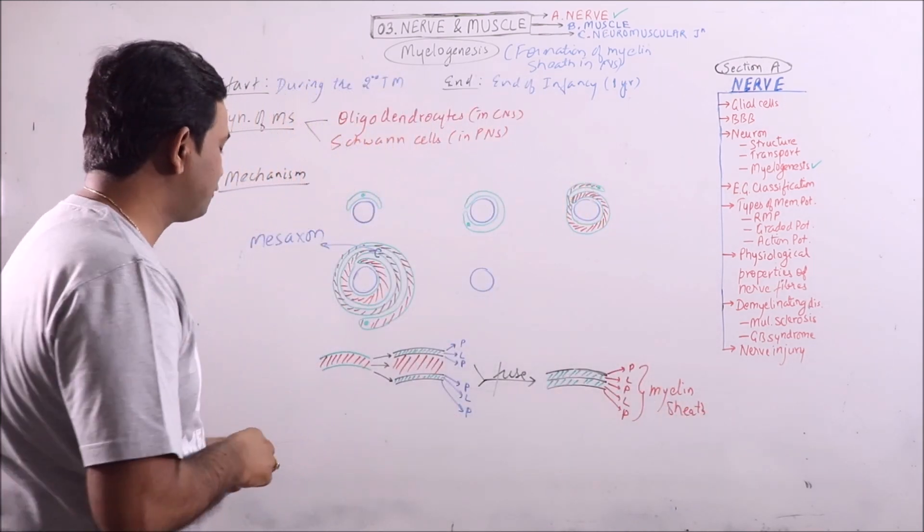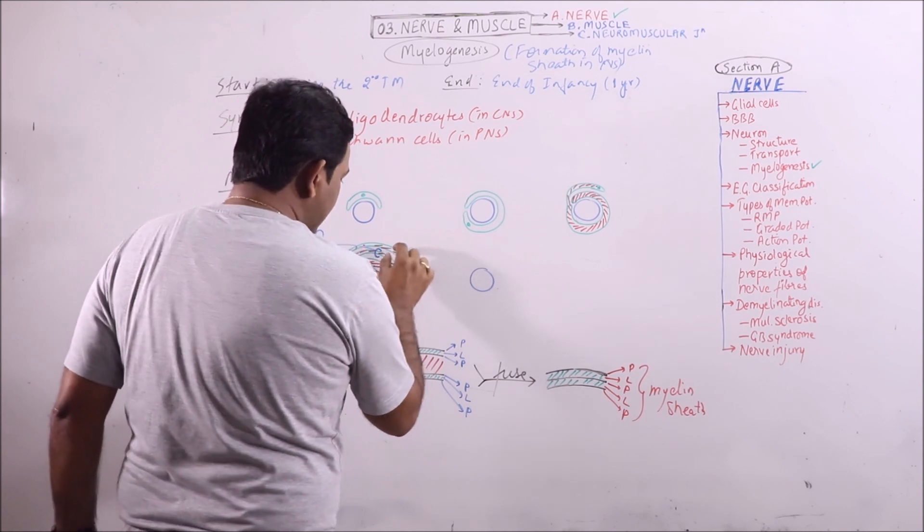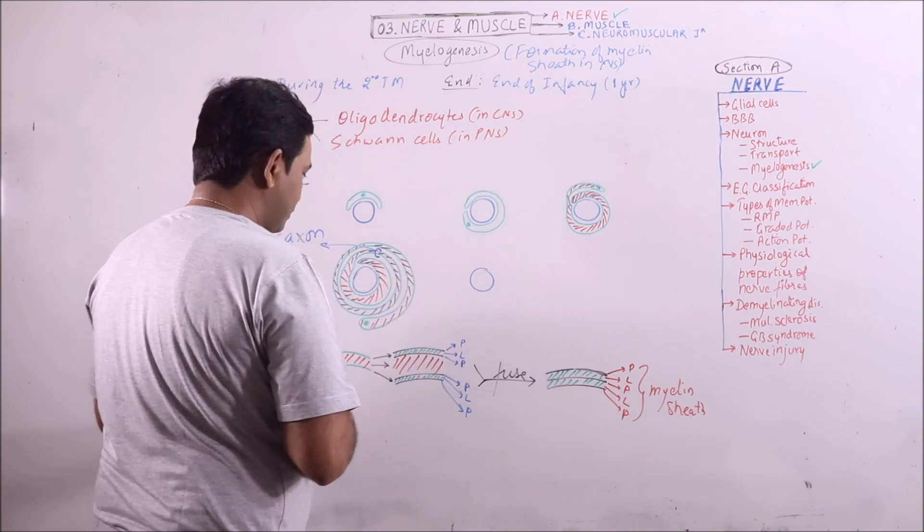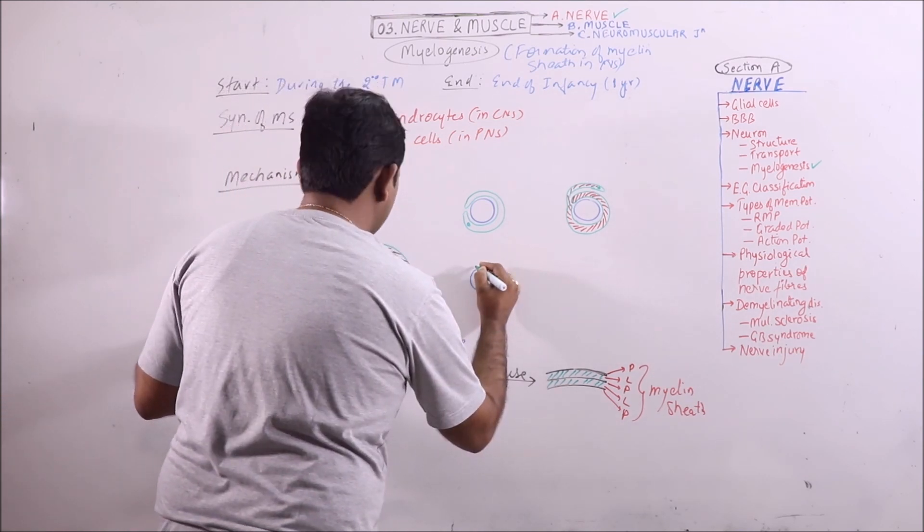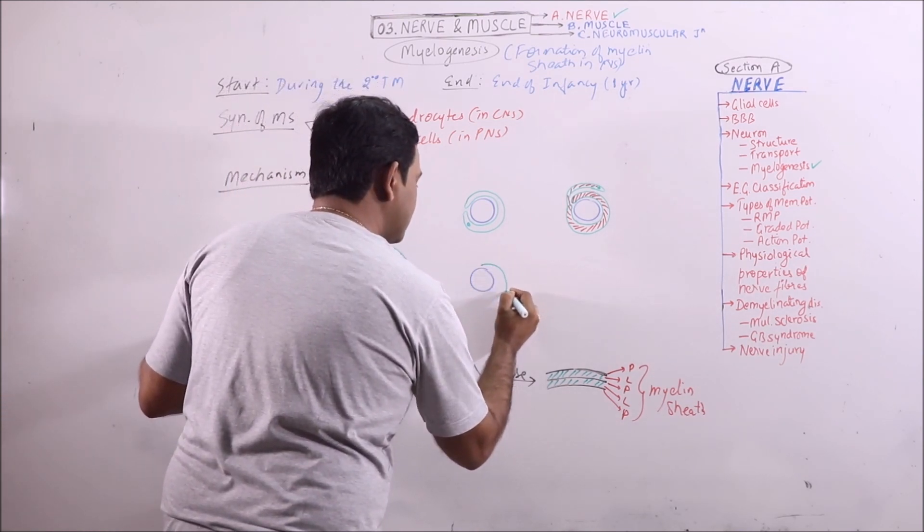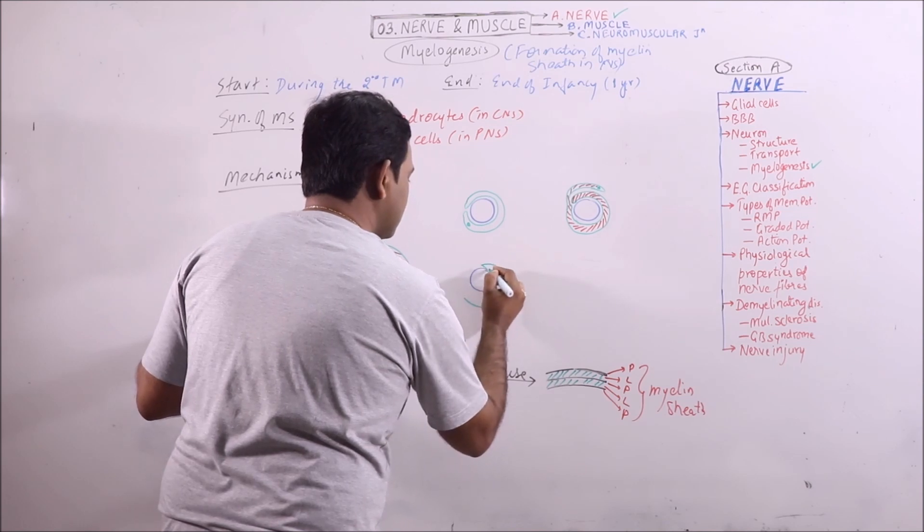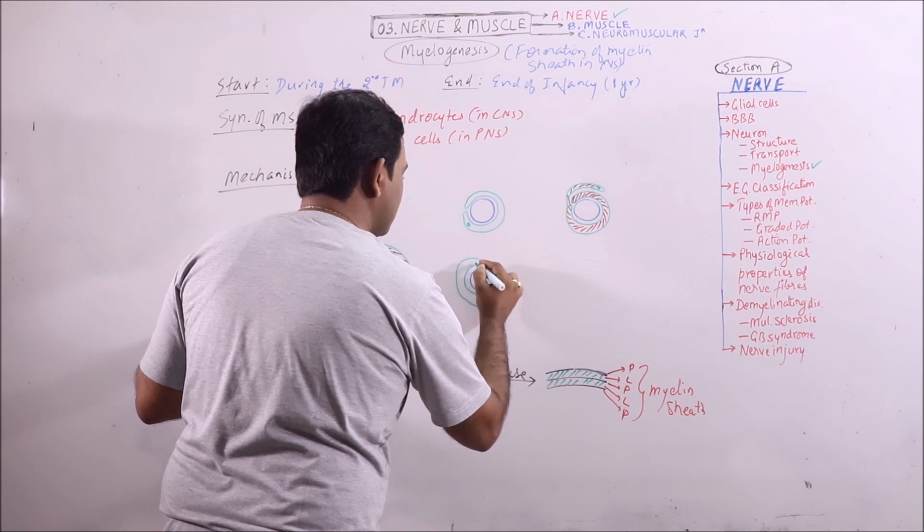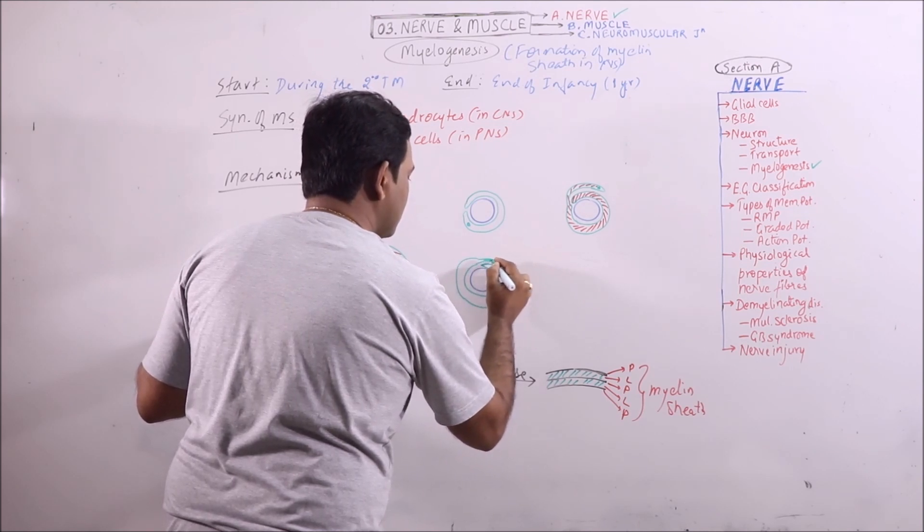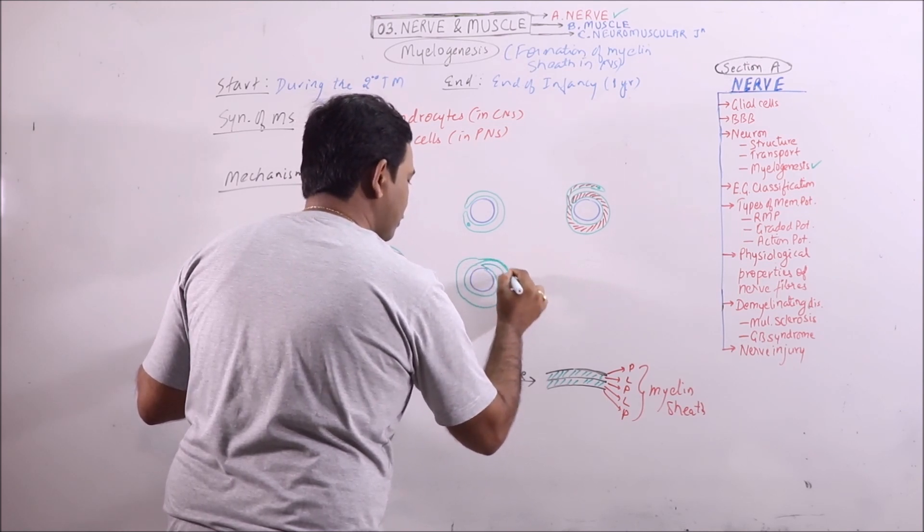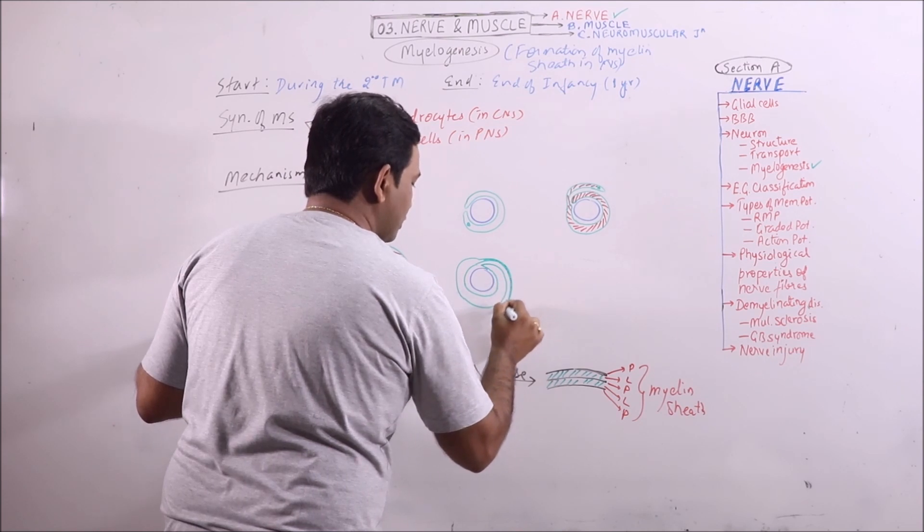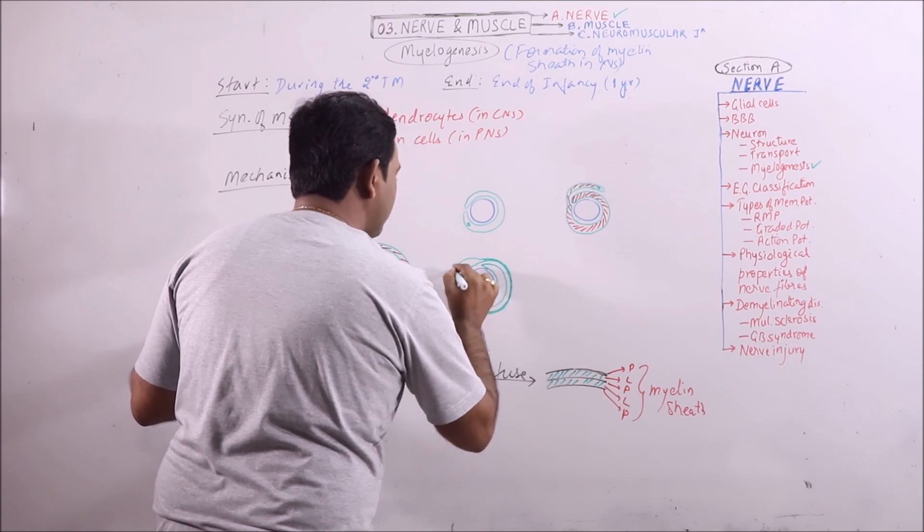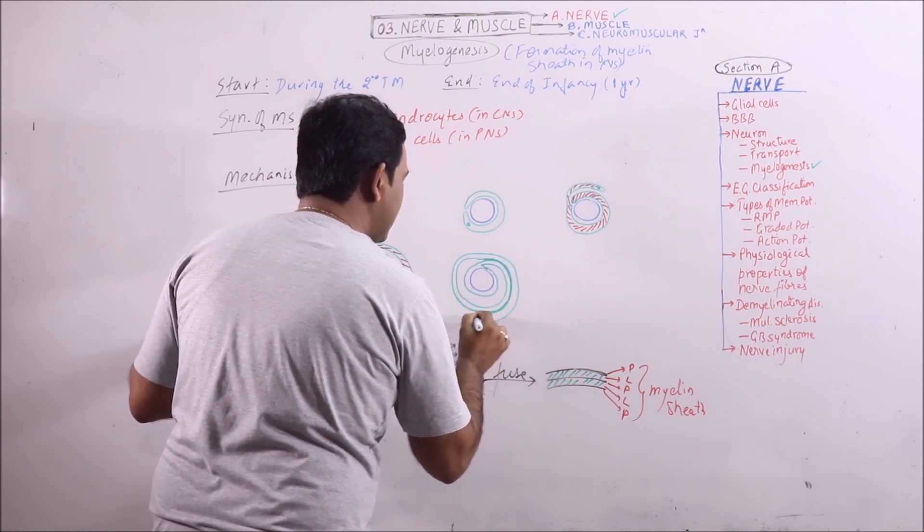So myelin sheath is formed in these layers which are surrounding or wrapping the axon. Now how it will appear? This starts as Schwann cell. Now from here the two layers of mesaxome have fused with no cytoplasm left within.